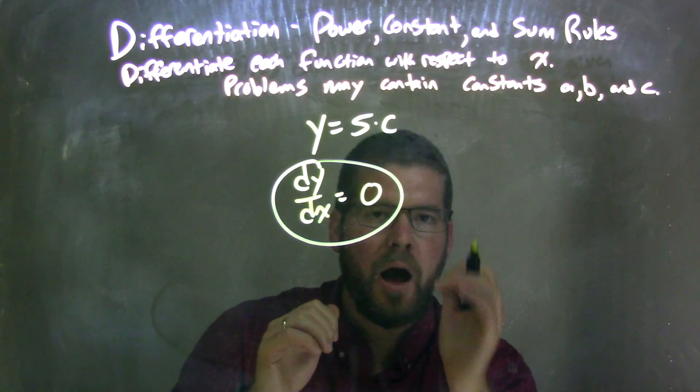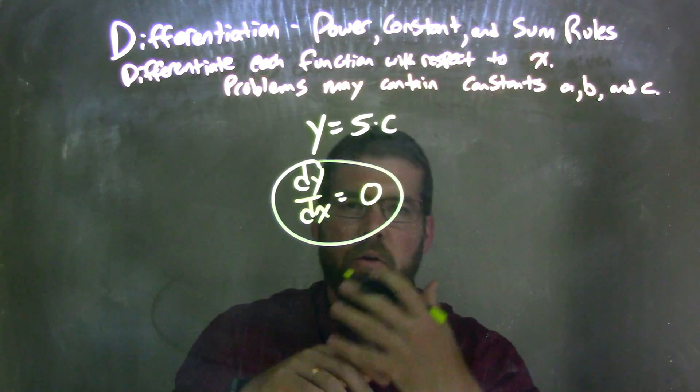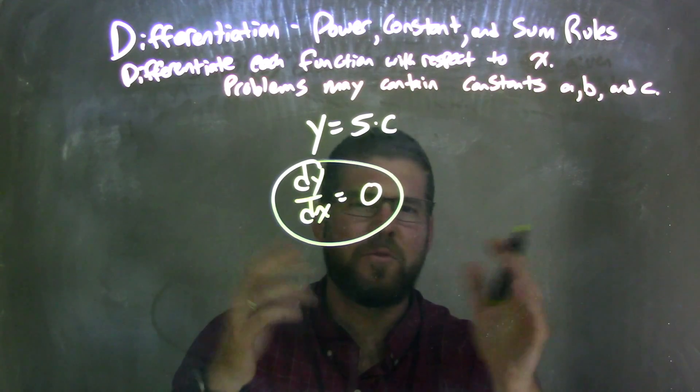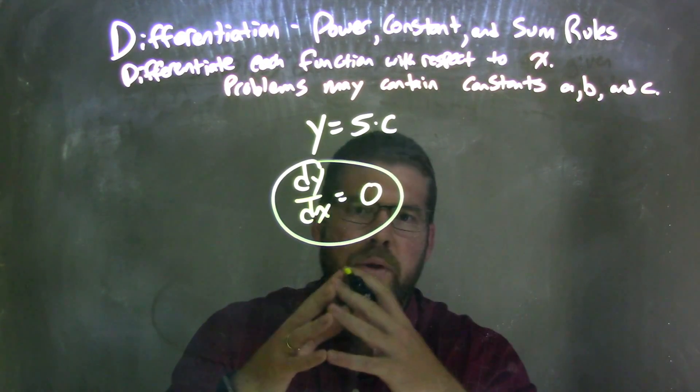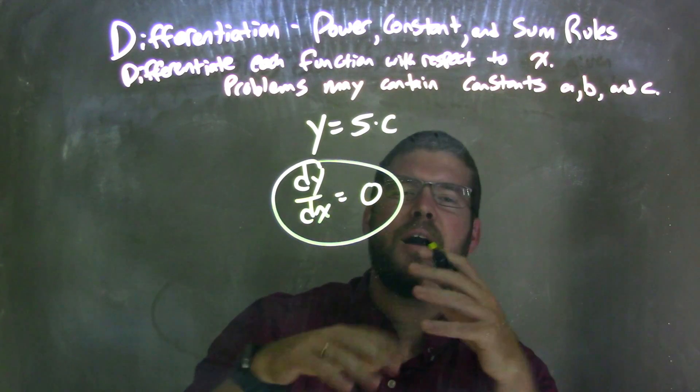Well, 5 times that constant is still another constant, right? For example, if the constant was 4, then 5 times 4 is 20. 20 is still also a constant. So 5 times that constant gives another constant.